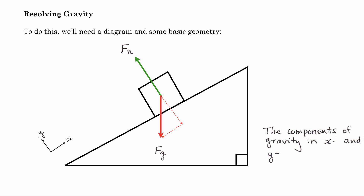We want to find the sum of forces in the x direction and the sum of forces in the y direction, so we need to resolve gravity into its two components. Let's note three special angles: angle beta, angle gamma at the top, and angle alpha at the bottom. We're going to prove that angle alpha equals angle beta, because if we can prove that, we can use the known angle of incline directly to resolve our vectors — which simplifies things greatly.